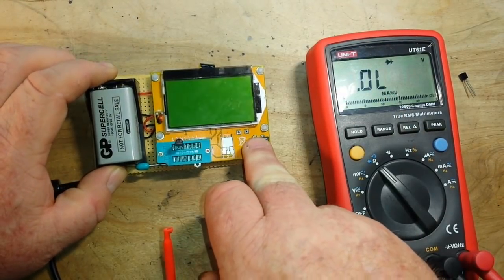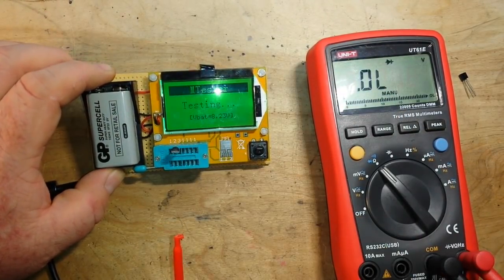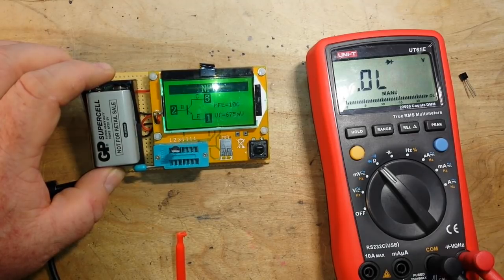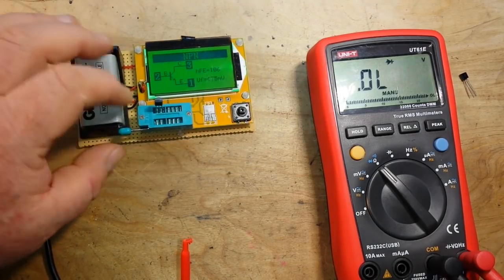We'll put it in the component tester just to verify. There you go, emitter base collector, this time an NPN.